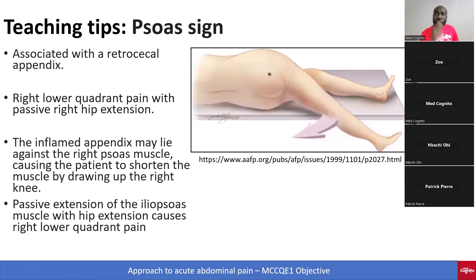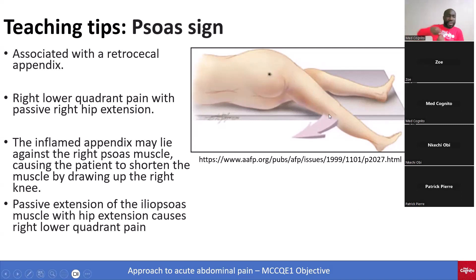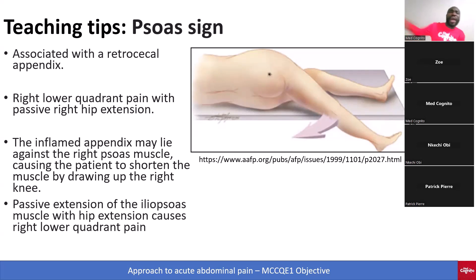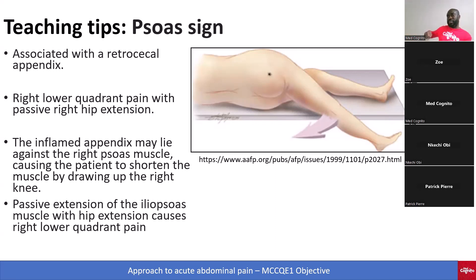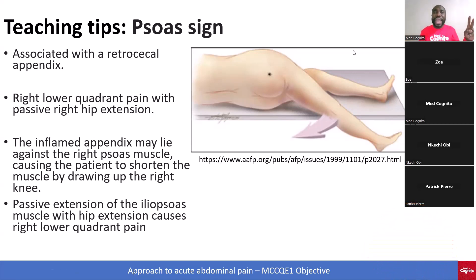The psoas sign is associated with retrocecal appendix. It presents as right lower quadrant pain with passive right hip extension — when we extend the hip backwards, the patient experiences right lower quadrant pain. The inflamed appendix may lie against the right psoas muscle, causing the patient to shorten the muscle by drawing up the right knee. Passive extension of the iliopsoas muscle with hip extension causes right lower quadrant pain. So with the psoas sign, you are moving the leg backwards.